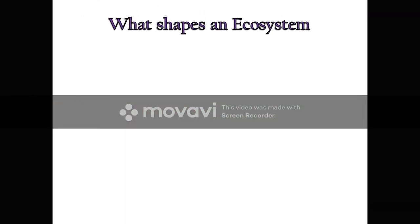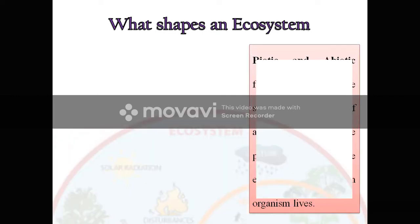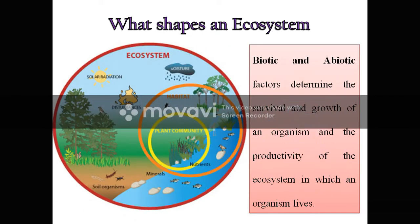An ecosystem is shaped by biotic as well as abiotic factors. These biotic and abiotic factors determine the survival and growth of an organism and the productivity of the ecosystem in which an organism lives.